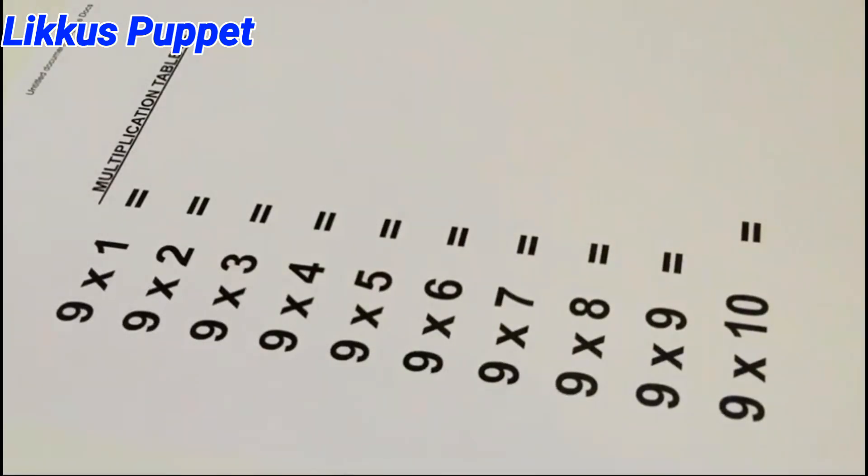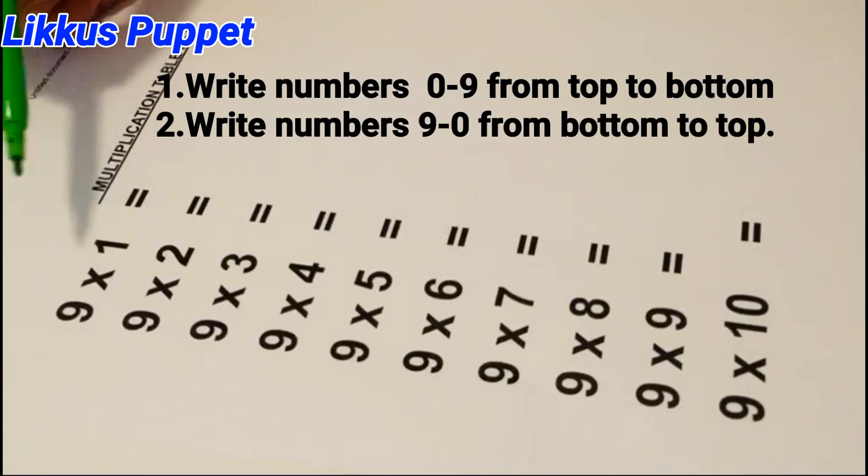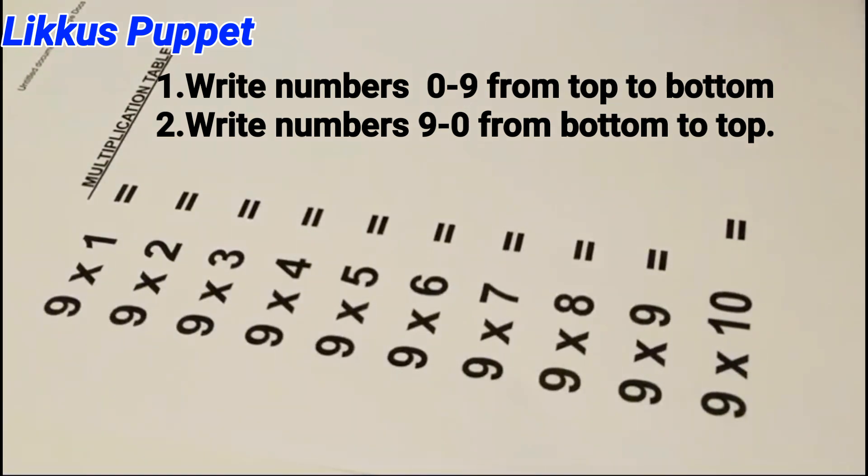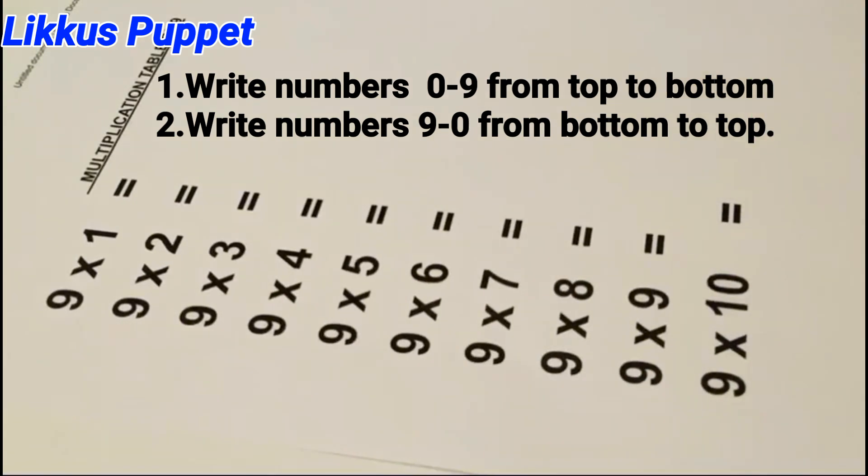So now we're going to have a good look at the trick. All you need to do is write the numbers from 0 to 9 and then in the opposite way from 0 to 9. But we're going to write it from the bottom. You'll see what I mean.